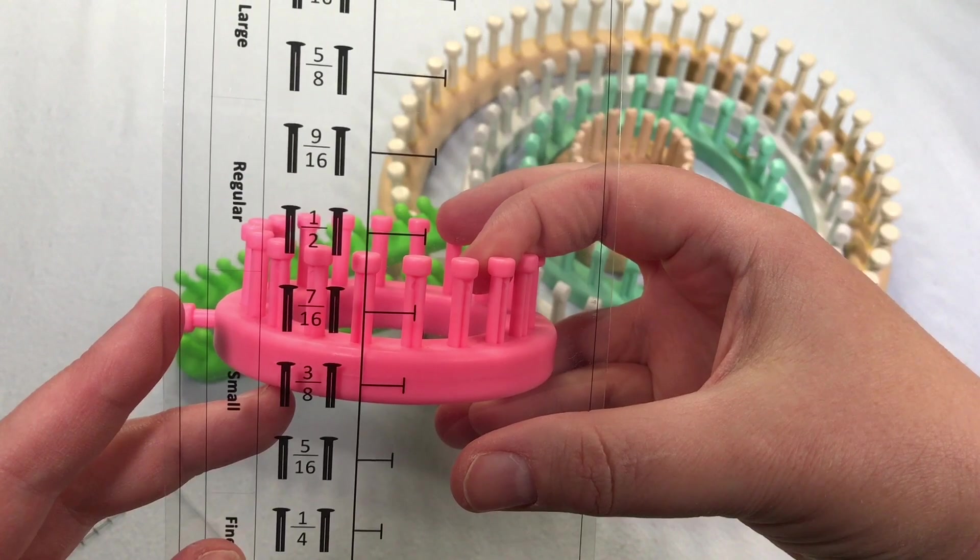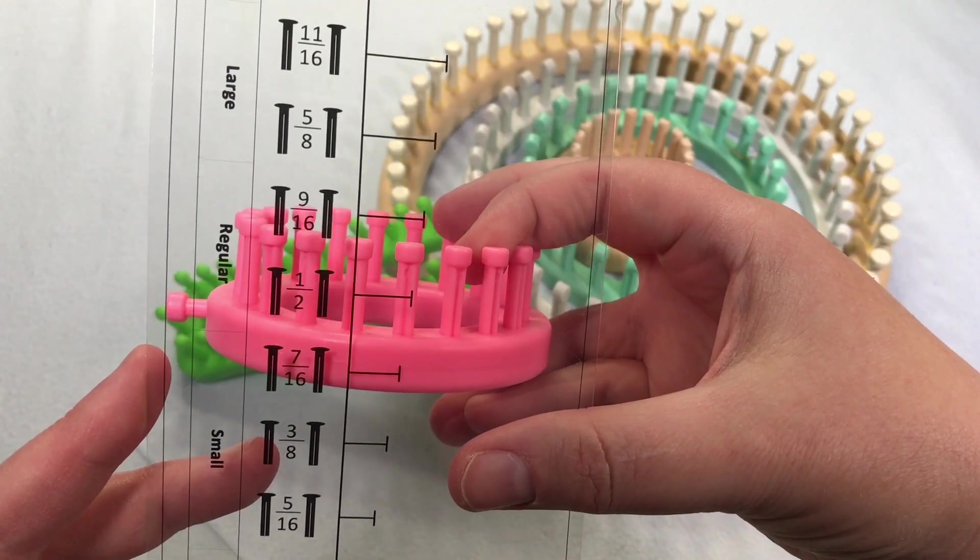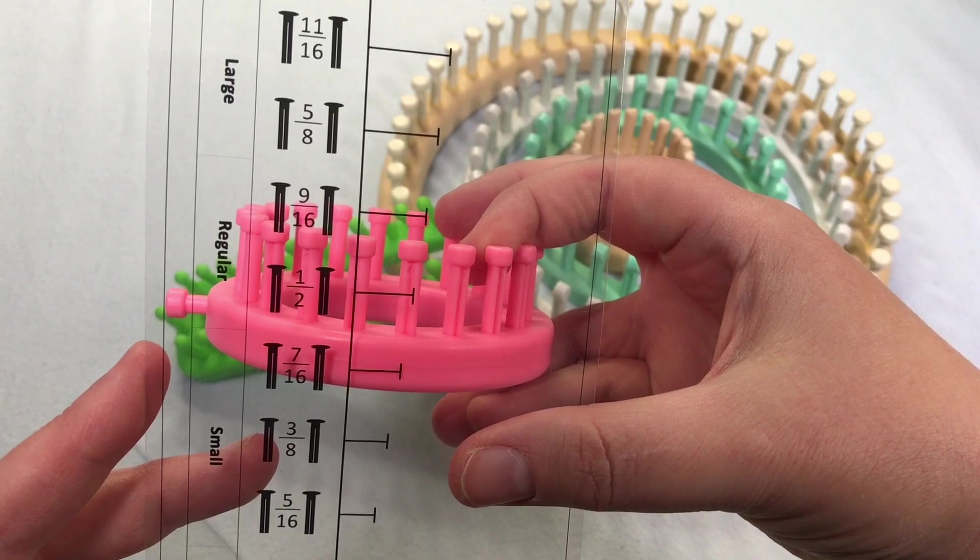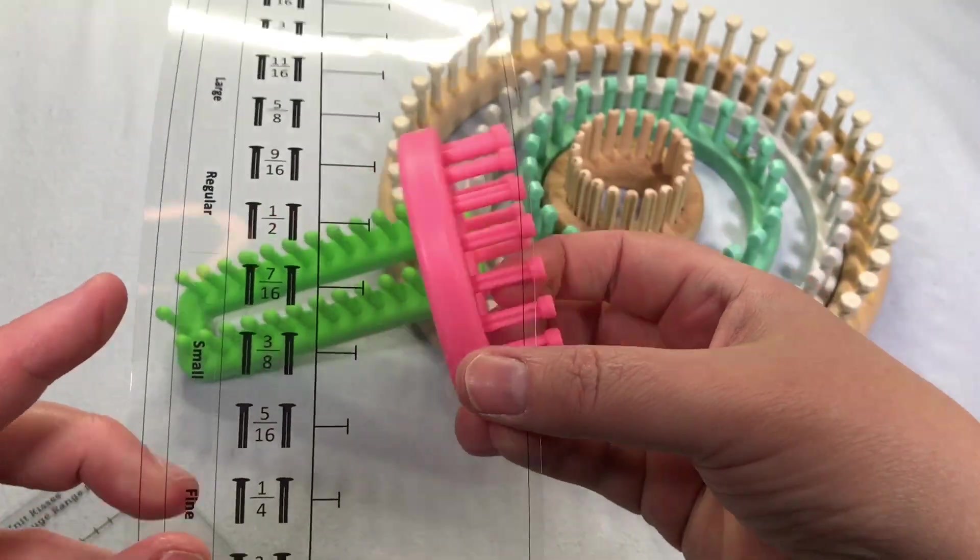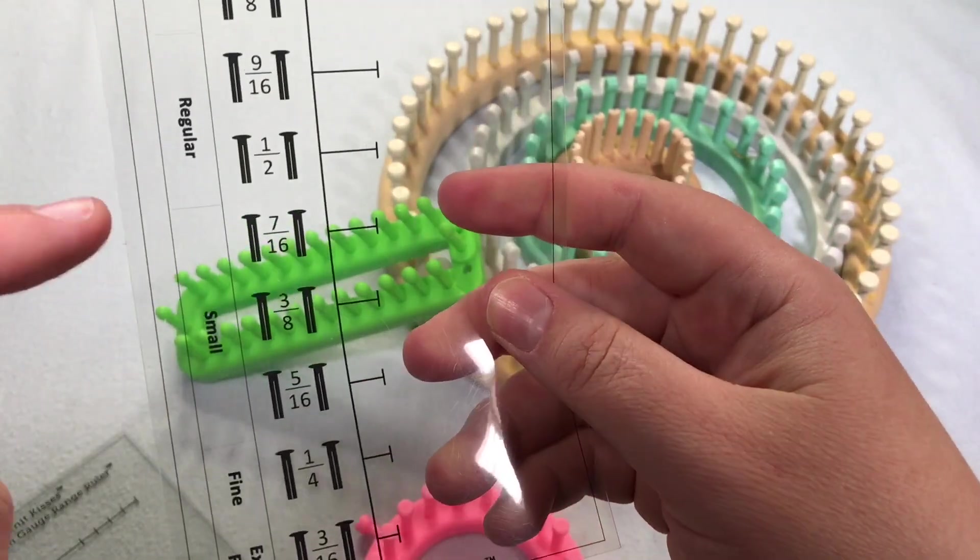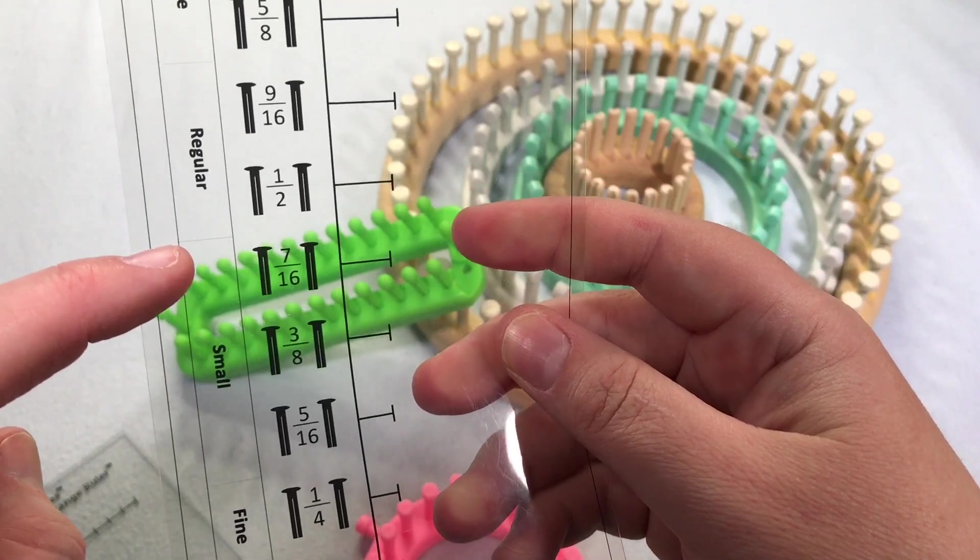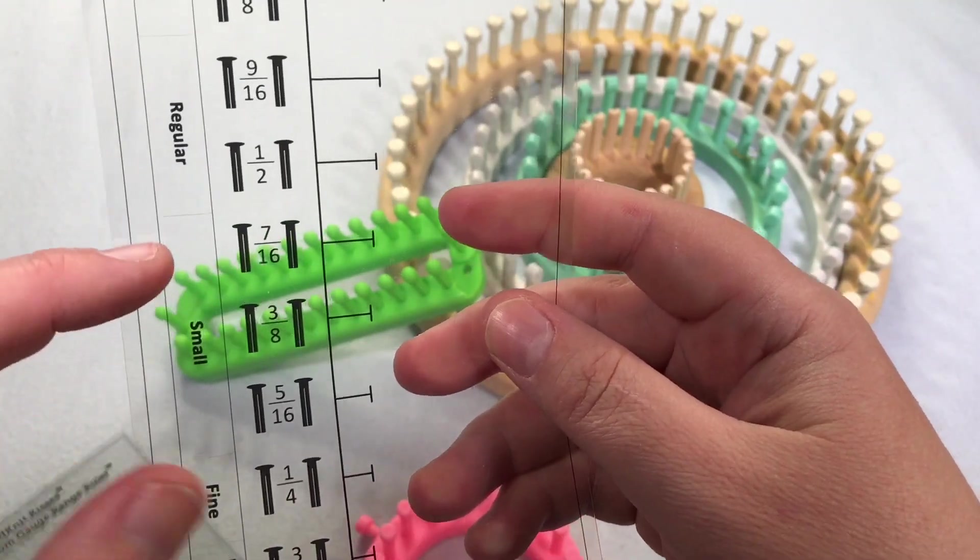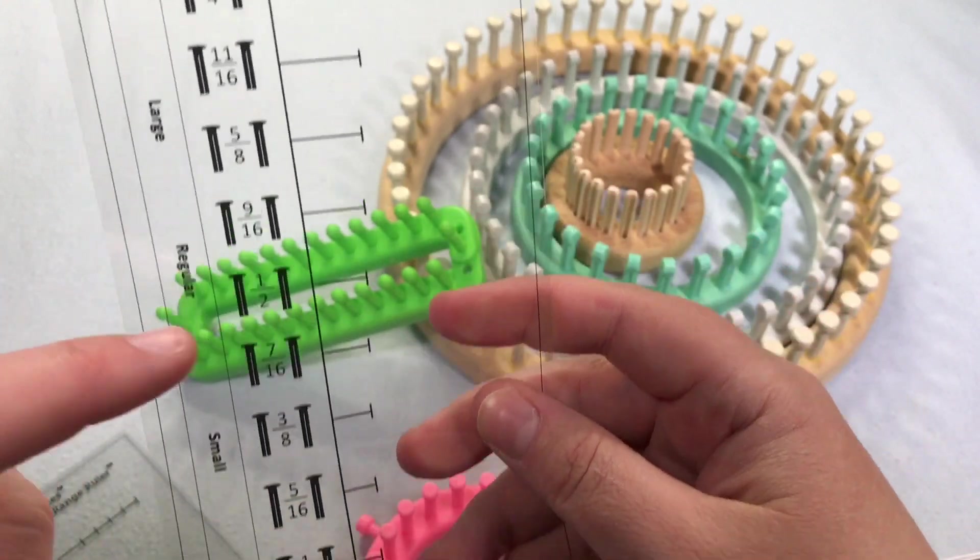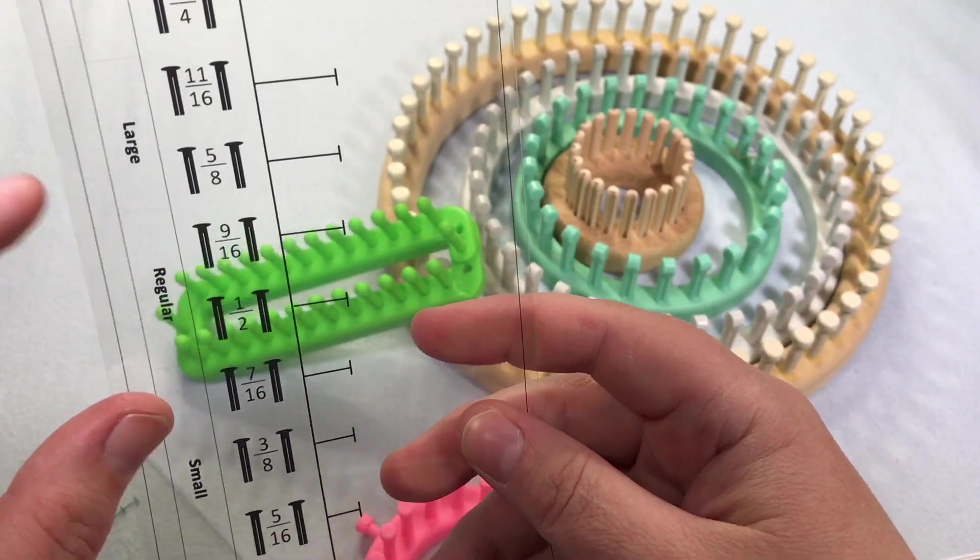But basically, it fits in the middle of each peg. Okay, so if I went to the half, you'd see that it goes over a little bit. Now it's falling in, you can see this little line here. It's faint on the camera, but you can see it in real life. You can see that the seven sixteenths falls in the small gauge, and if it went up to half inch, it would fall in the regular gauge.